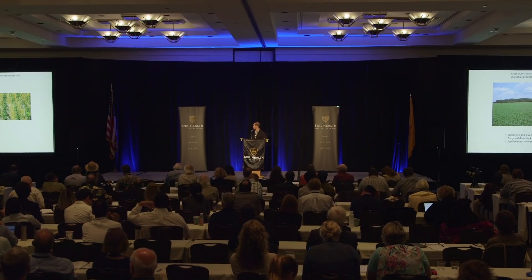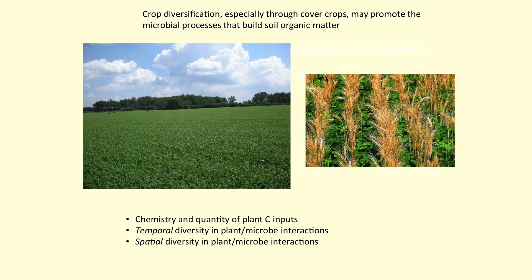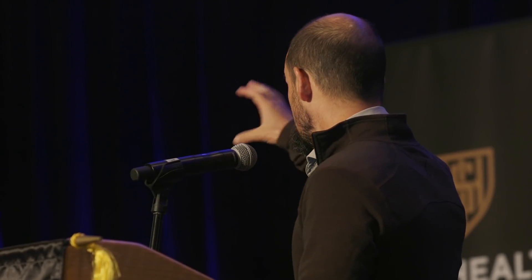We wanted to explore questions about microbes, their physiology, and the formation of soil organic matter in the context of cropping system diversification. My lab has worked a lot in this area and shown benefits of crop rotations. Rotating crops alters the chemistry and quality of plant carbon inputs, changes the temporal diversity and timing and spatial dynamics of carbon inputs into soils — and all of these things have a strong influence on the microbial community and their formation of soil organic matter. So we went to explore this at a field site at the Kellogg Biological Station.